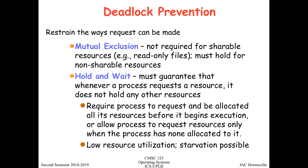The first condition is mutual exclusion, which means that when a process is using a resource, it has exclusive access to that resource. To prevent this, you allow resources to be shared. However, that's not always possible because some resources are intrinsically not shareable — like locks, for example. For resources like read-only files, sharing is possible, but you cannot always prevent or violate mutual exclusion.